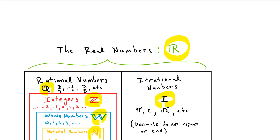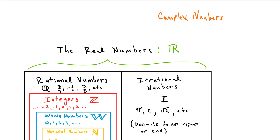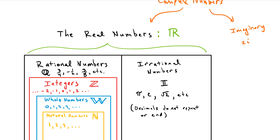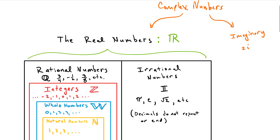The real numbers are not in a vacuum by themselves. They are a part of a larger system. That larger system is called the complex numbers. We won't talk about the complex numbers here, except to mention them. But the complex numbers are everything that you have learned about in algebra — every number that you have dealt with comes from the complex numbers. Complex numbers are either real or they are imaginary. So the complex numbers break down into the real and imaginary. Let's talk about the real.